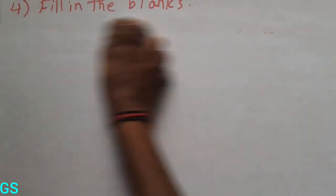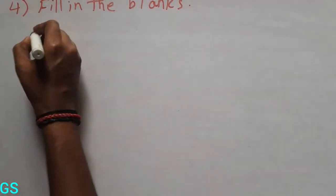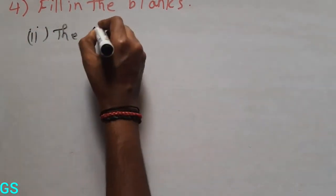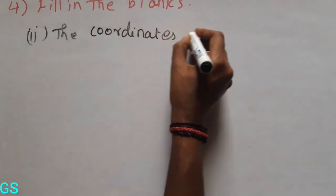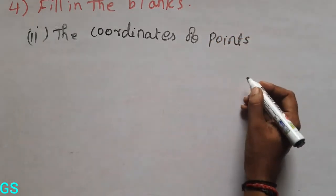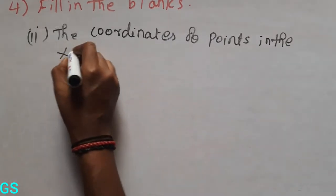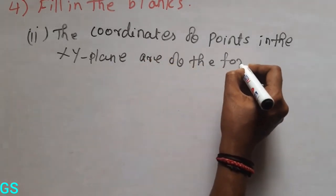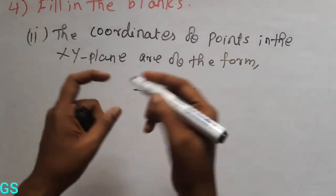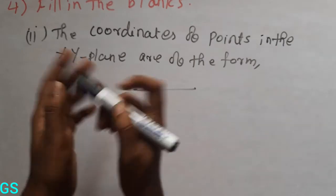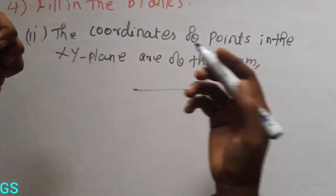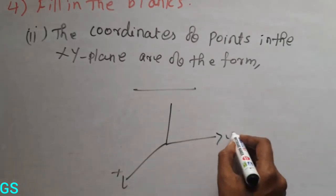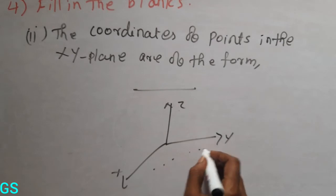Second one mark. The coordinates — the coordinates of points in the XY plane are of the form. You can see the meaning, you can see the answer. The coordinates of the points — there are points in the XY plane diagram: X axis, Y axis, Z axis, XY plane, points with coordinates.